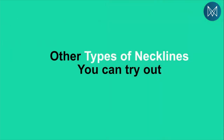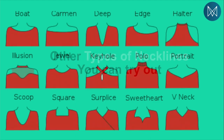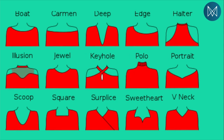Necklines are not just limited to the extended U, V, square, and round varieties - there are many other variations. There is a boat neckline, which is pretty much like an extended U neckline. There is an off-shoulder neckline, a deep V neckline, an edge neckline which is more like an asymmetrical neckline, and a halter neckline which is a bit colored but sort of like a polo. Then there's an illusion neckline, a jewel neckline, and a keyhole neckline which has a keyhole shape.